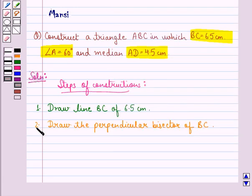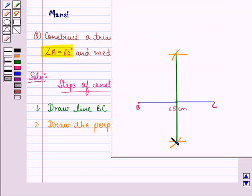Step 2 is, draw the perpendicular bisector of BC. So like this we draw the perpendicular bisector of BC.